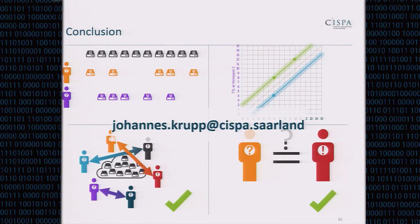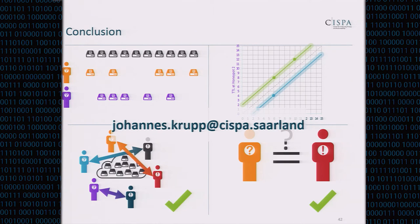Question: Lots of ISPs try to prevent IP packet spoofing — have you considered using that information to narrow down the location of attackers? Because a potential attacker could not be in a network of an ISP that prevents spoofing. Answer: That's right — in order to launch the attack you need the ability to spoof packets. We have not considered this yet, but thanks for the suggestion — we will look at those.